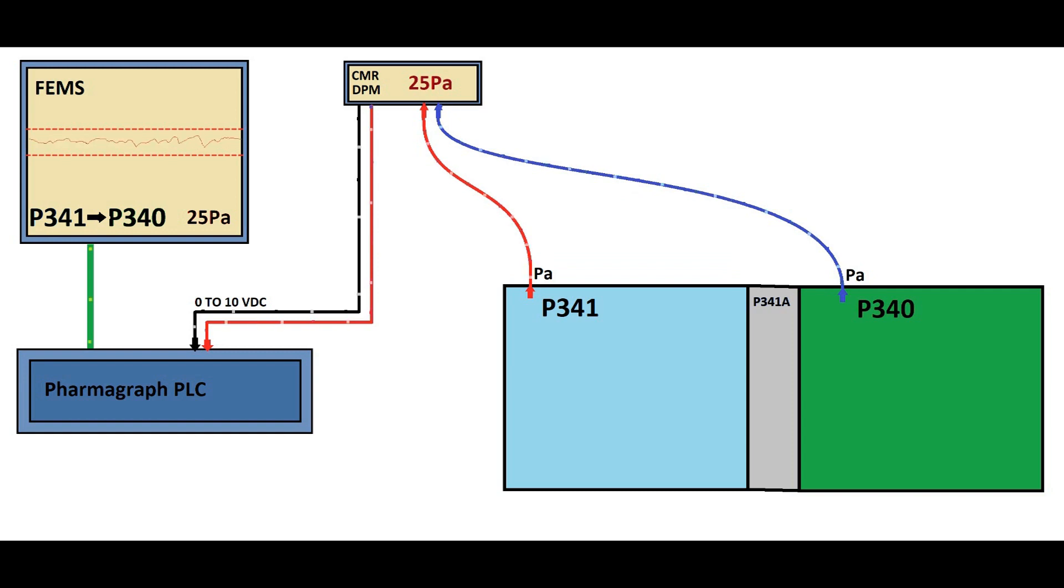Validation of EMS involves demonstrating and documenting that the system consistently meets its predetermined specifications and accurately measures the intended parameters within its operational environment. This process ensures the environmental monitoring system functions reliably and produces data that can be trusted for decision making.